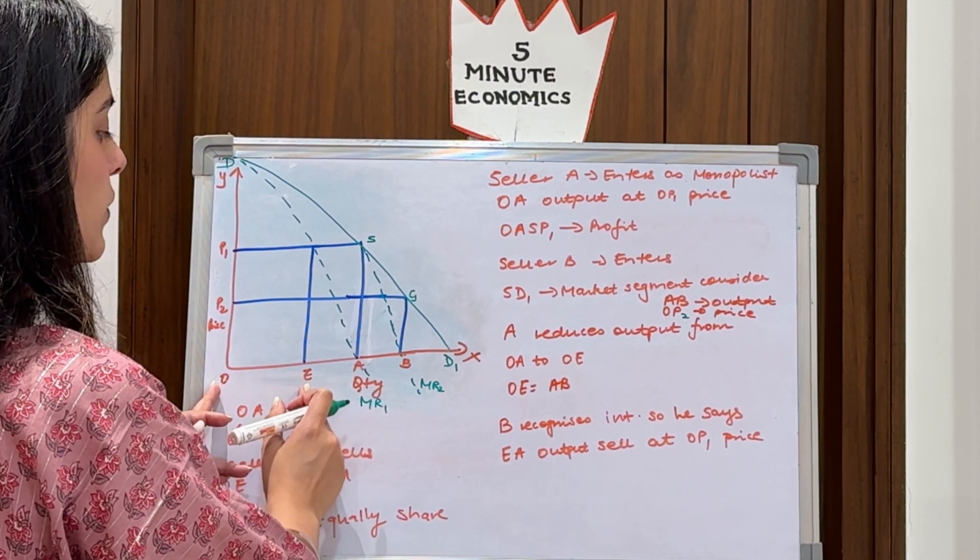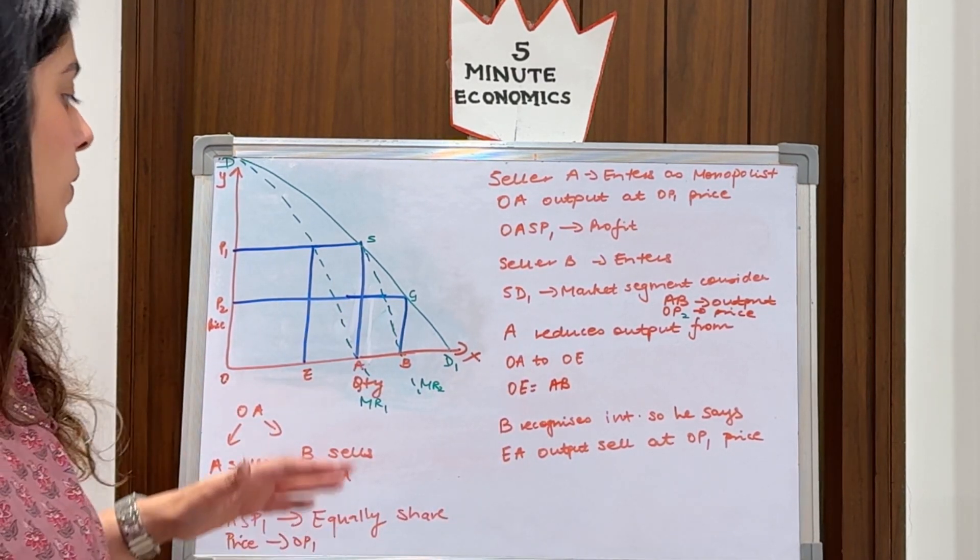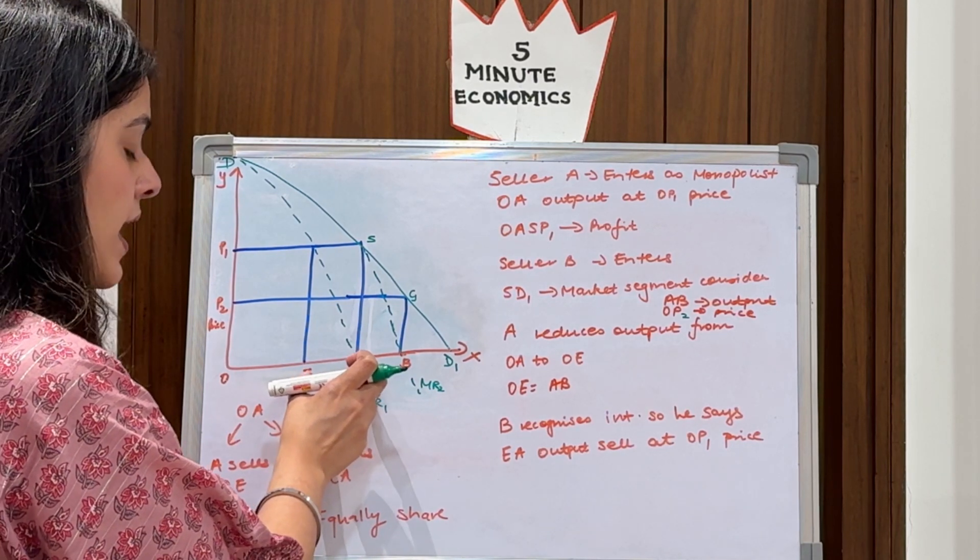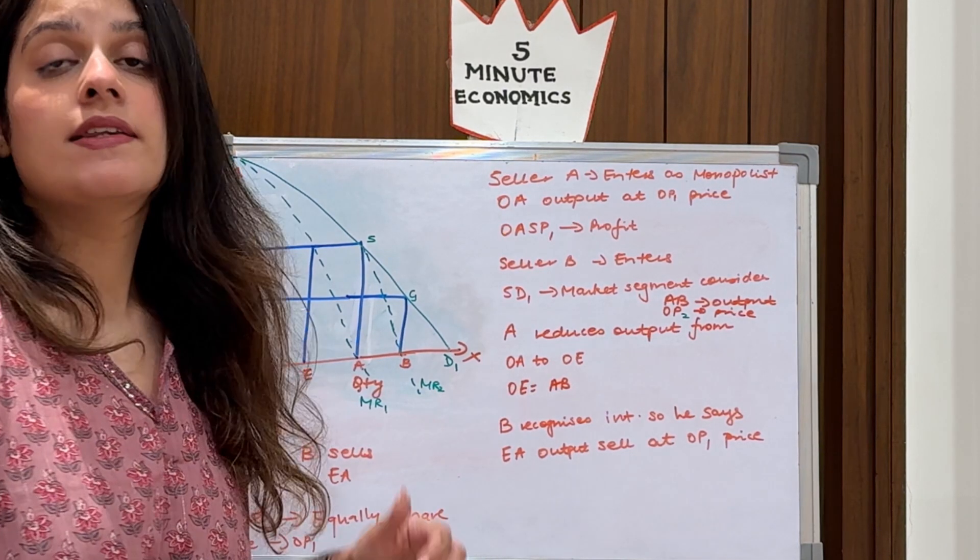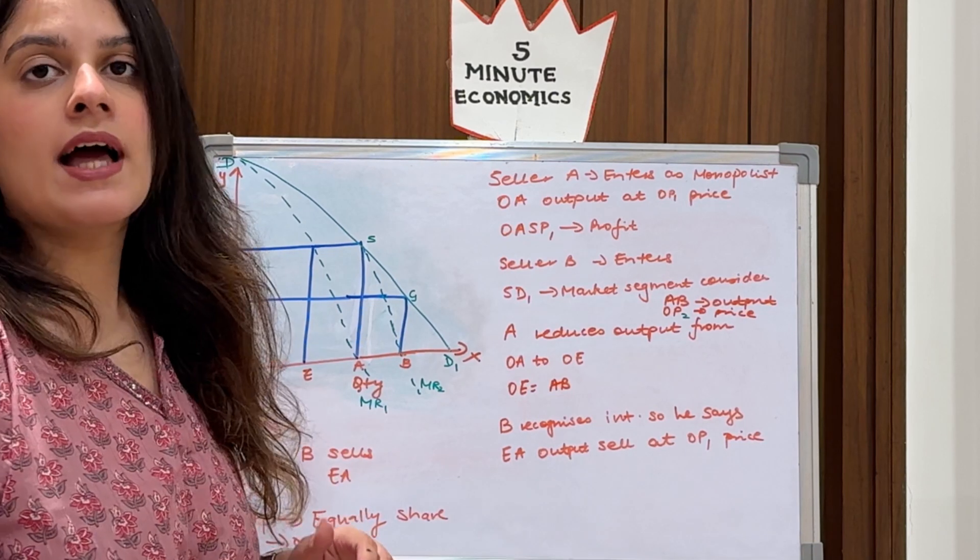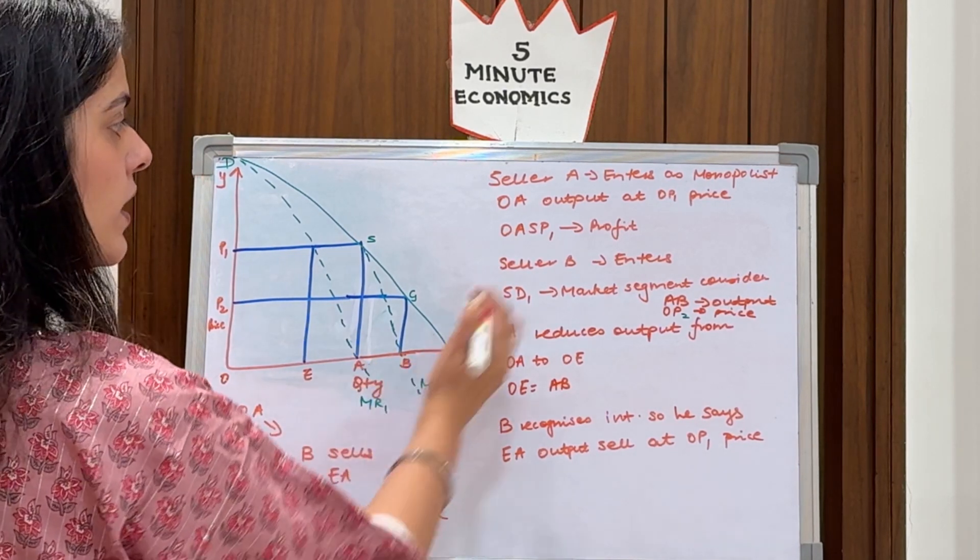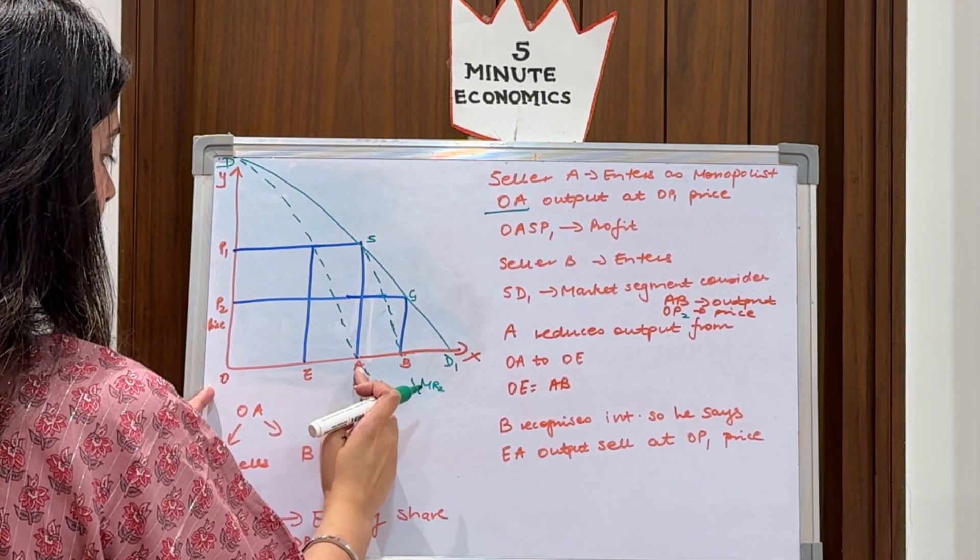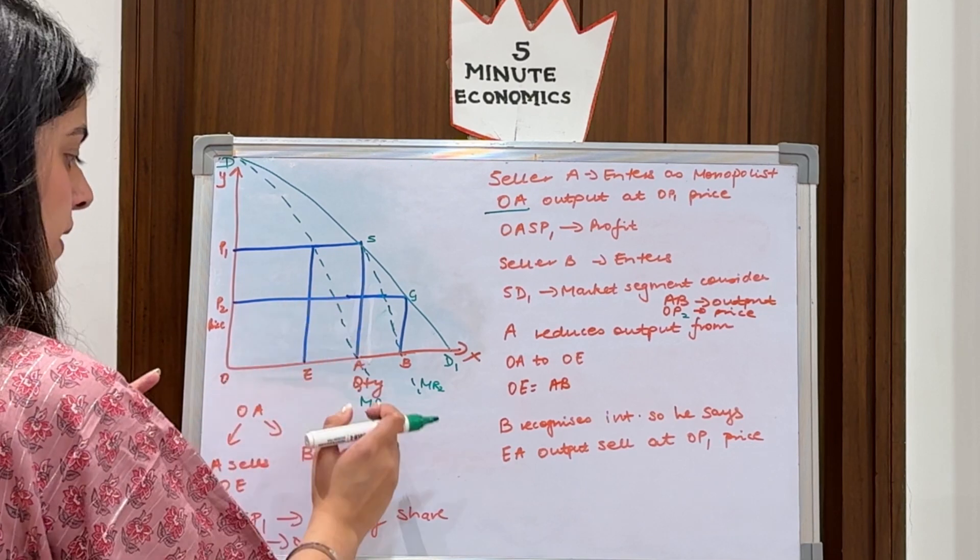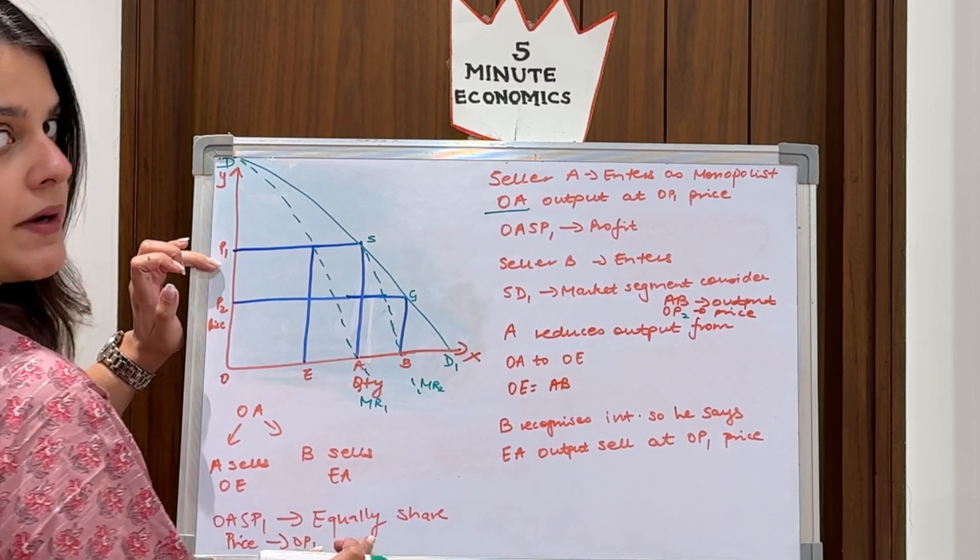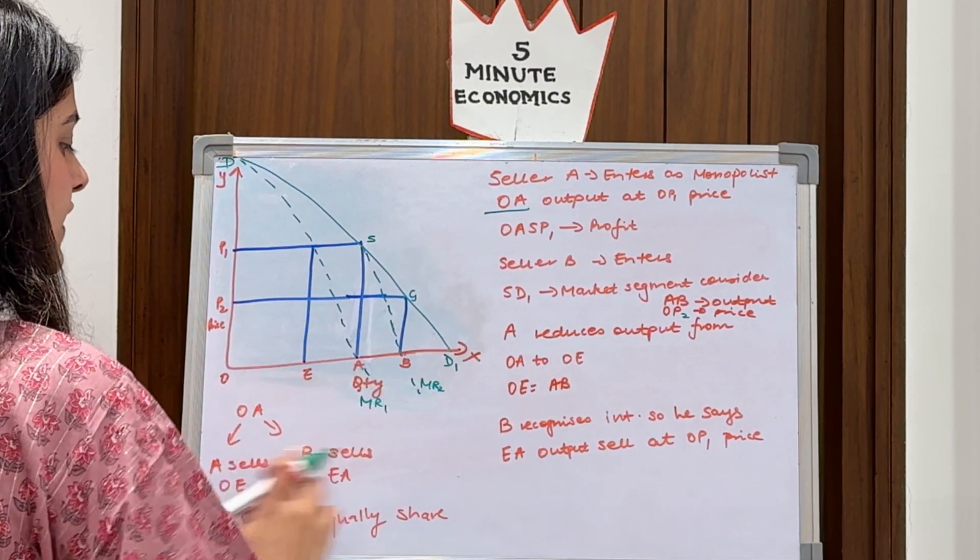From OA he reduces his output to OE, and remember OE is equal to AB, which is B's output. Now B also recognizes this interdependence, so he says okay, now I will produce E amount of output rather than what I have thought initially as AB, and he says that we will do that at OP1 price. In doing that, both are at a benefit. OA was the total output right? Initially I told you OA is the total output. E output here - A says that I will sell OE amount and B says that I will sell E amount. They have divided it equally. And what is the price they will sell at? They will sell at price P1, which is beneficial for both of them. So they equally share this profit OASP1.